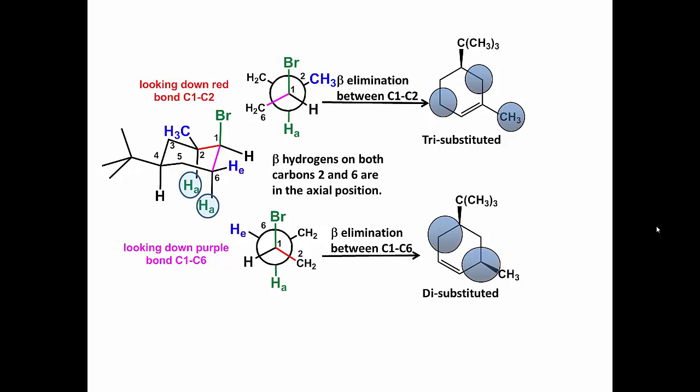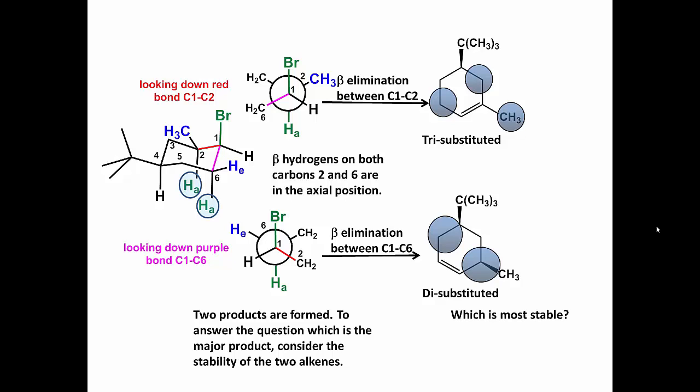Since there are two products formed in this reaction, it is not stereospecific. It will be regiospecific because the stability of the alkenes produced are different. Which is most stable?